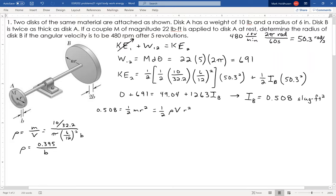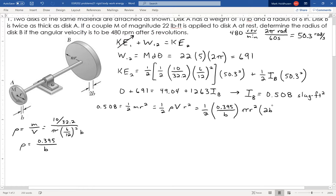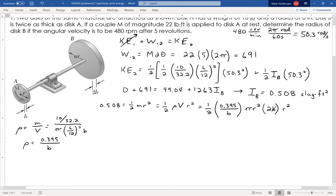Going back to my I equation, it's 1 half times rho, which I just found to be 0.395 divided by B, times the volume of this disk, which is pi R squared, that's the R I'm looking for, times the thickness 2B, times R squared. That's 1 half, this is rho, this is the volume, and that's R squared. The whole thing equals I. Notice I've got one big equation, my B's will cancel each other. The only unknown I have here is R, and I can easily find that R is 0.8 feet.